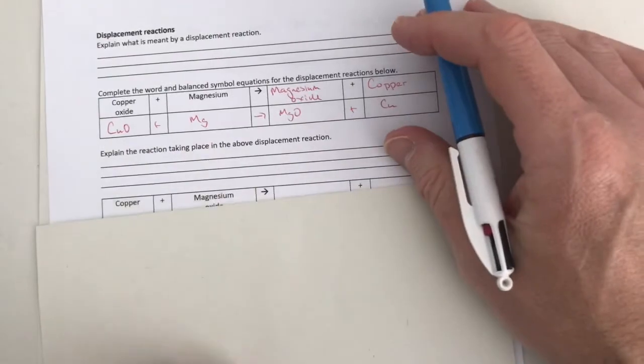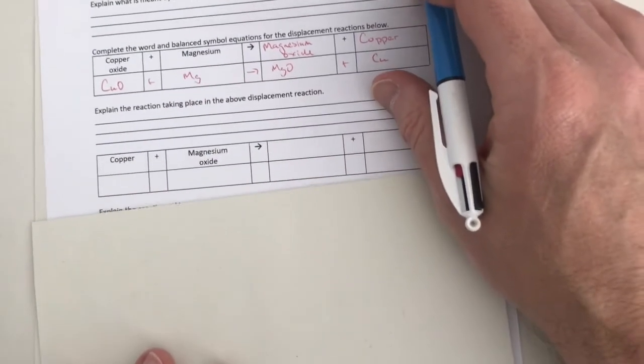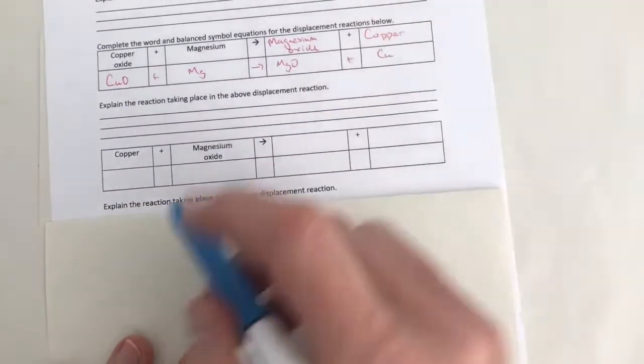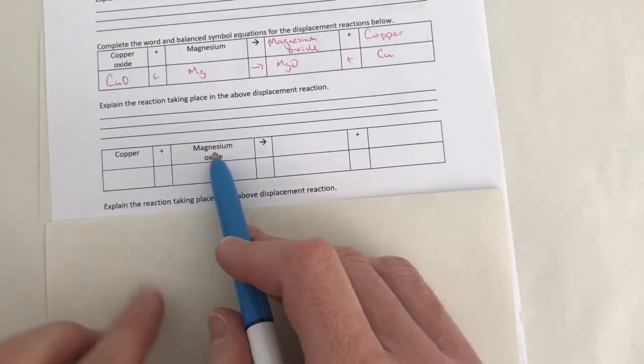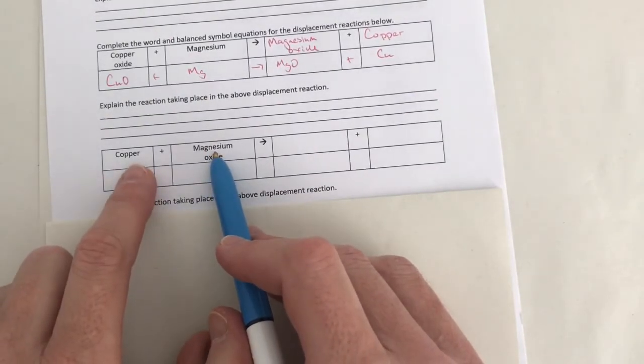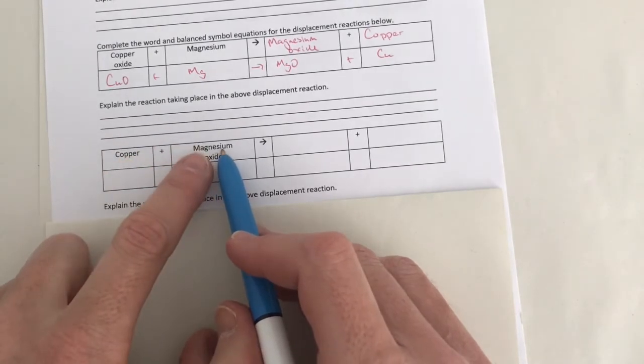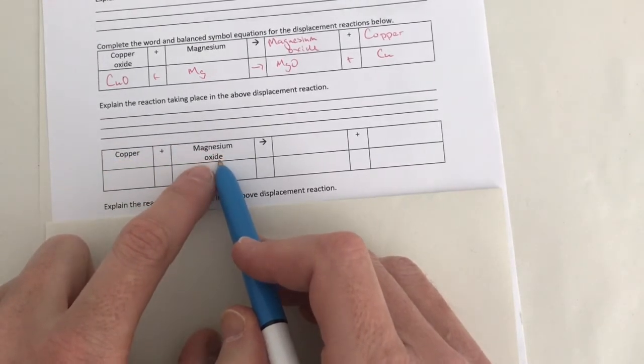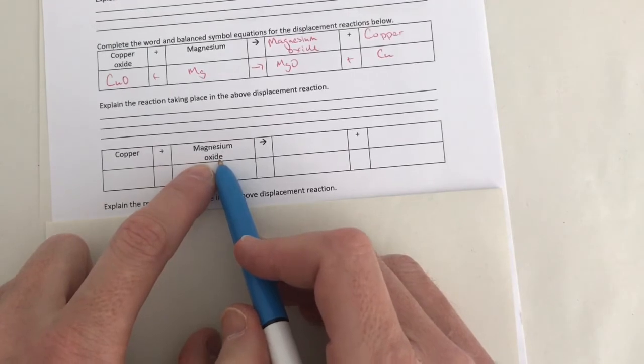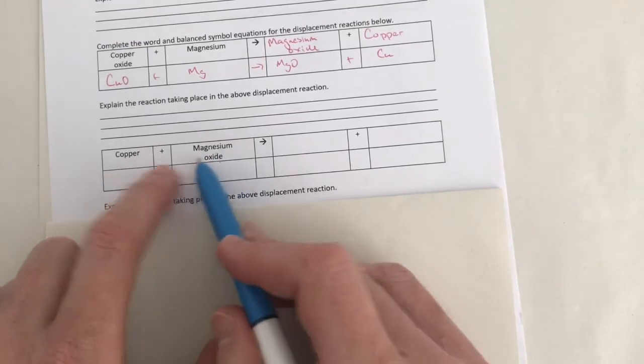If we have a look at the alternative to this, so if we had the copper with the magnesium oxide, then this reaction wouldn't work. Why not? Because the copper is less reactive. The magnesium is more reactive. The magnesium has already got the oxygen. It's already a compound with the oxygen.